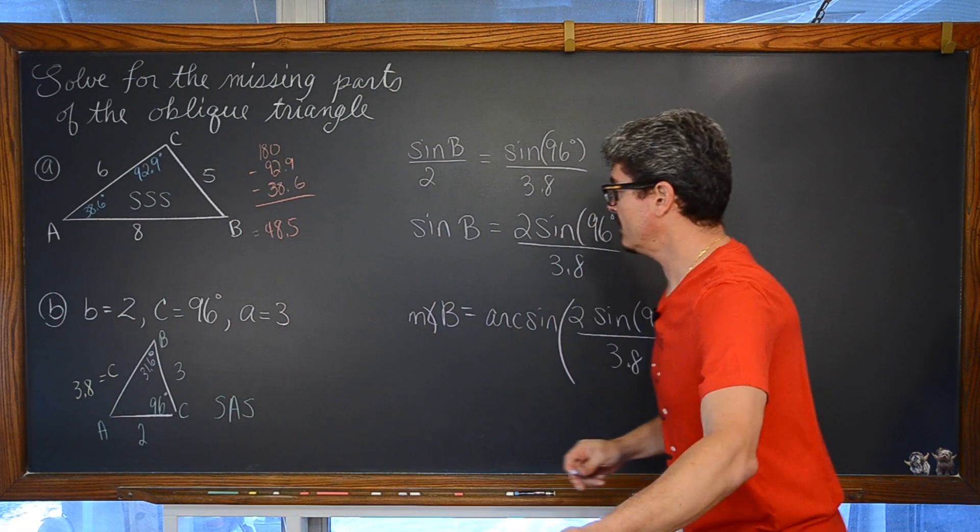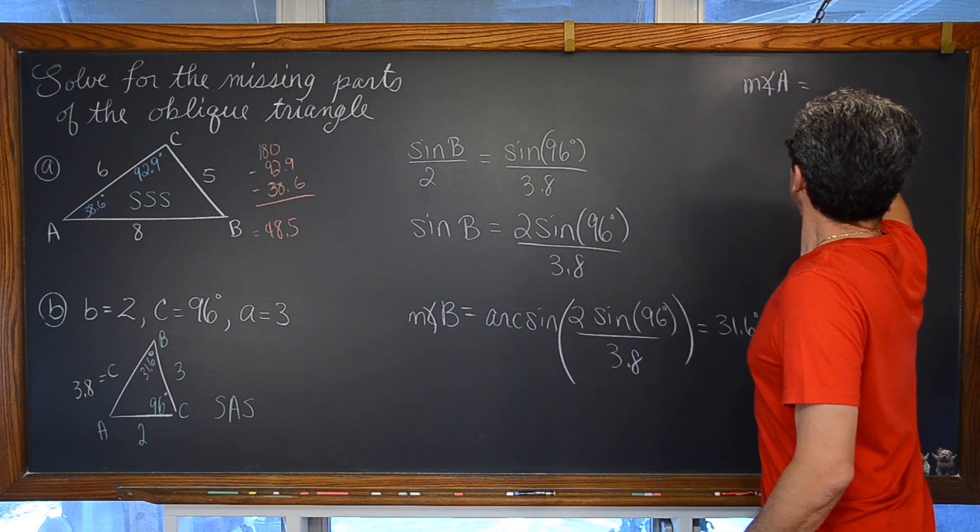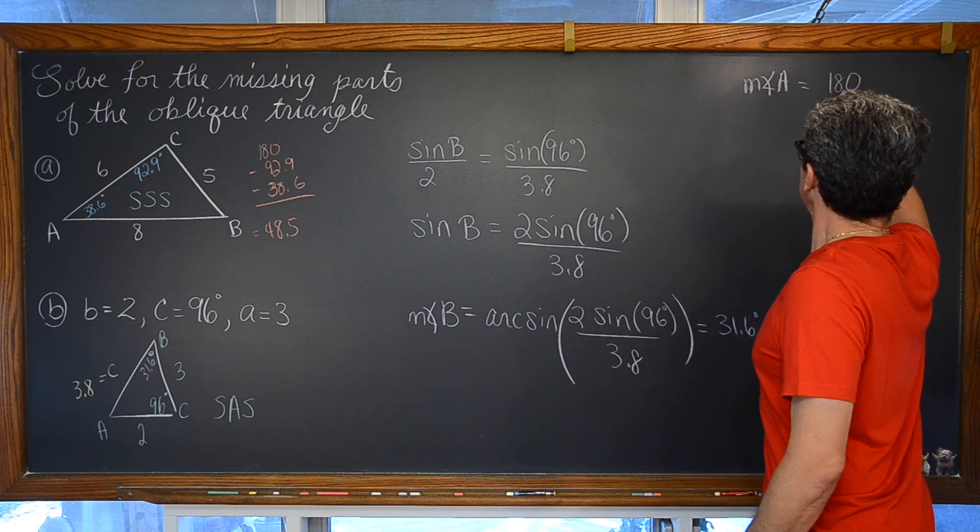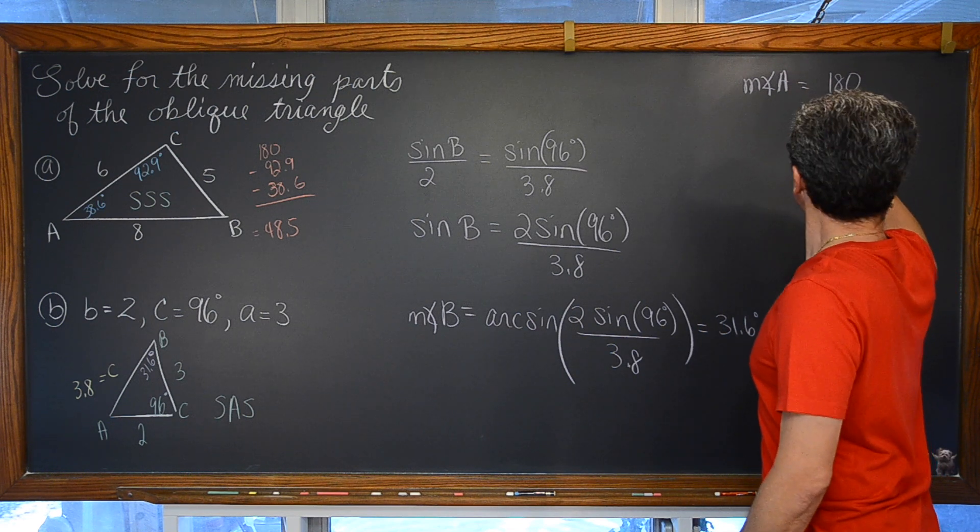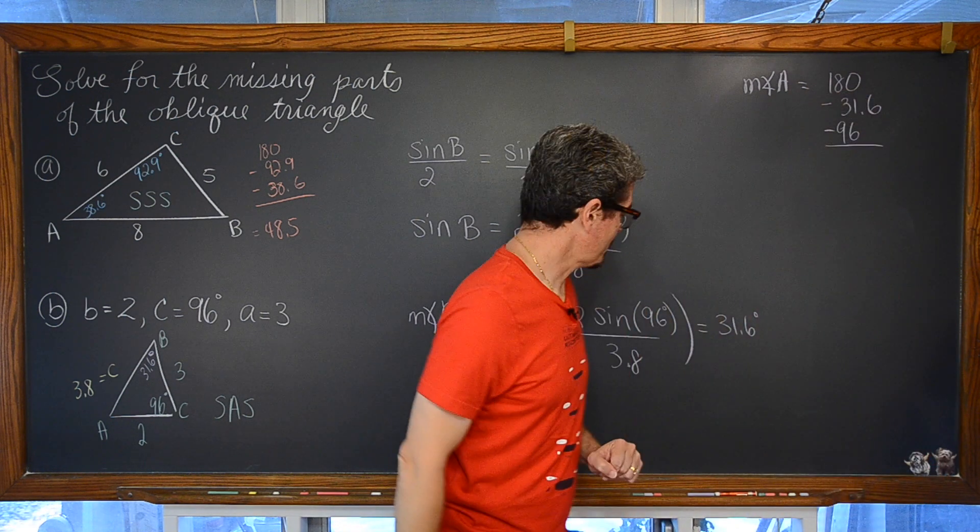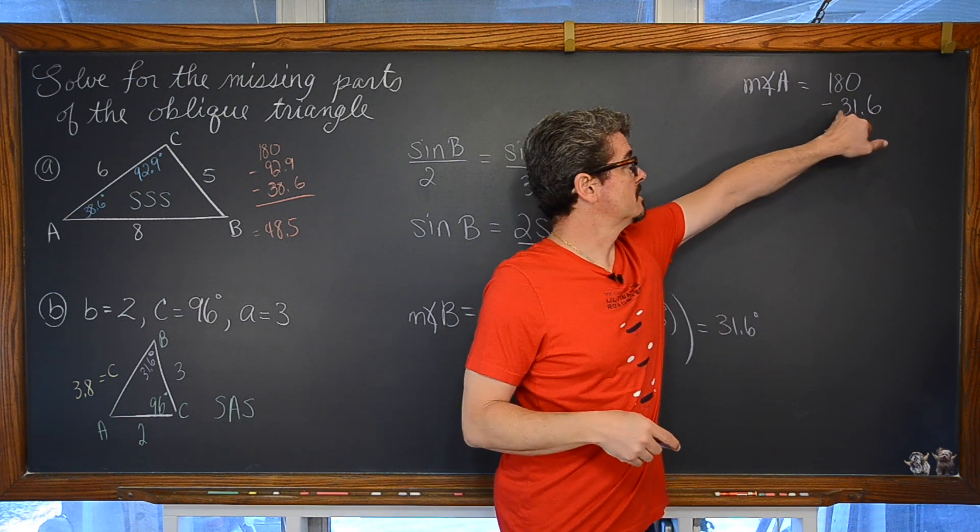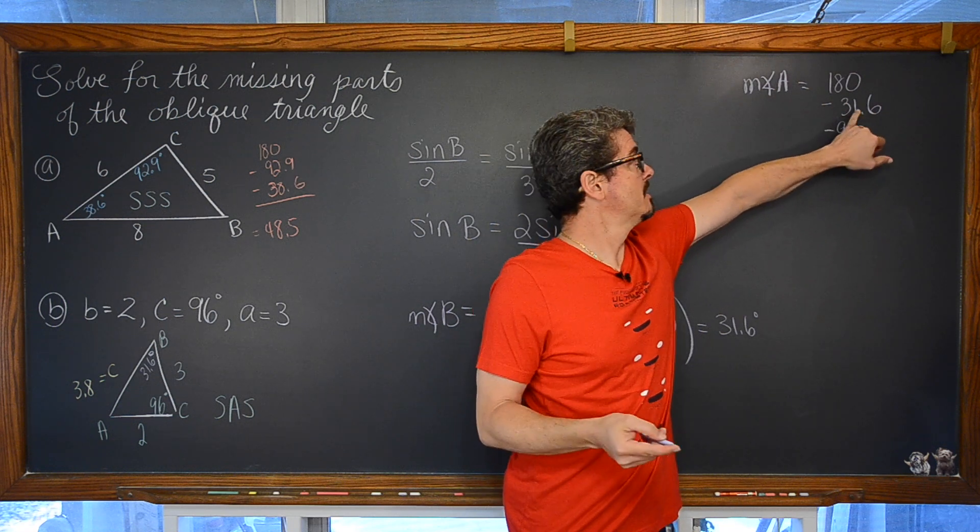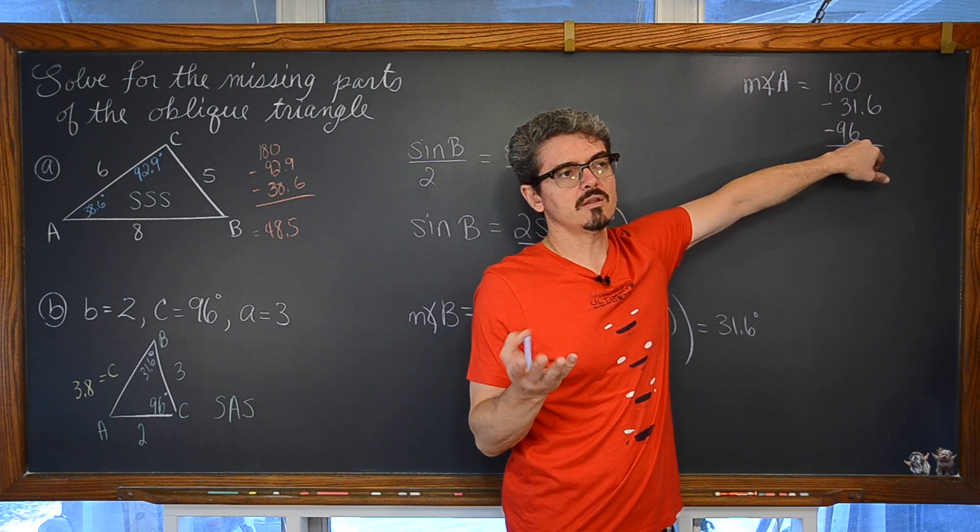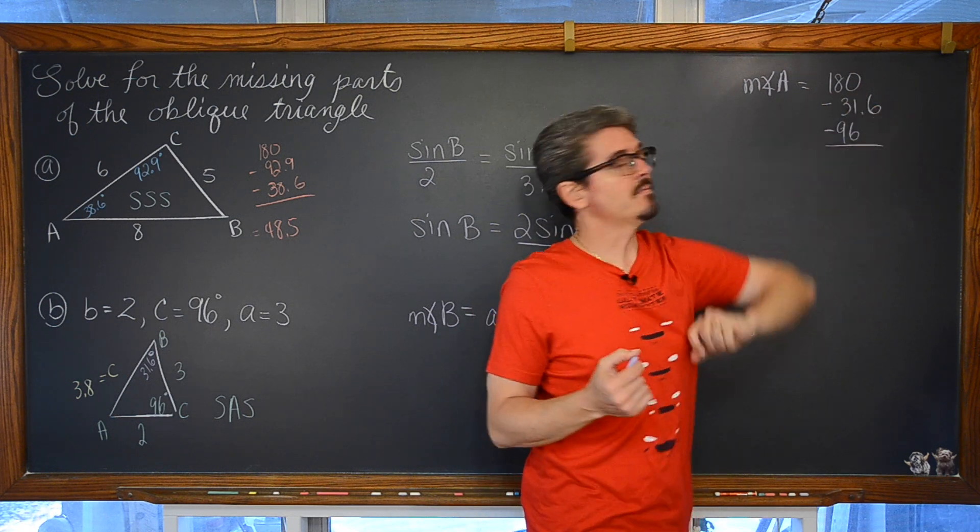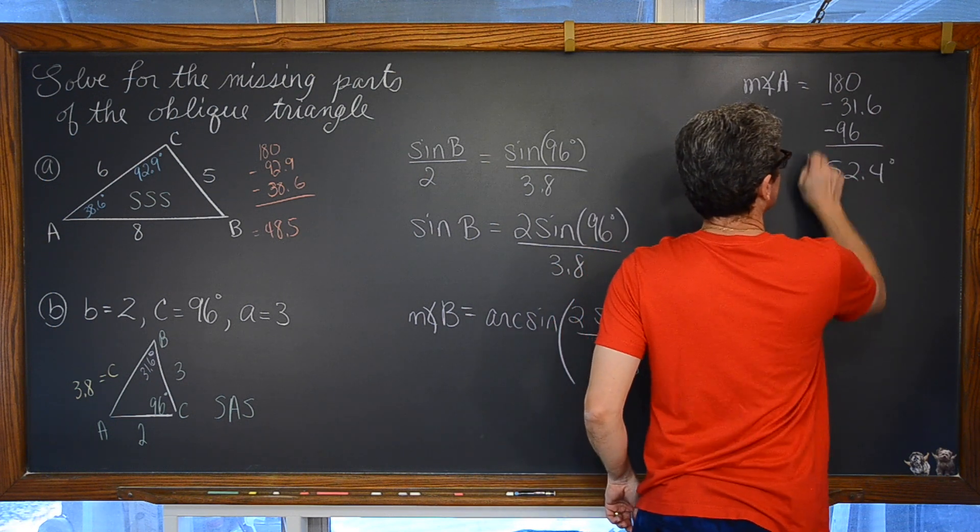And one more time for angle A. Then the measure of angle A is going to be, well, the result of doing 180 minus 31.6 minus 96. Working through this in our head one more time, we have 180 minus 90 is 90 degrees. Now we are down to 90 minus 30 is 60. 59. 59 minus 6 is what? 53. And now 53 minus .6 is 52.4 degrees.